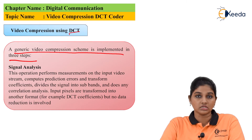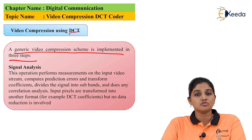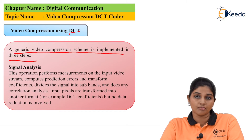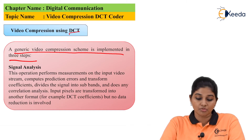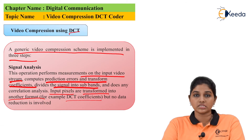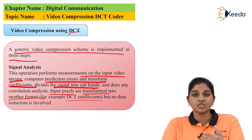The first step is signal analysis. As the name indicates, this block is used for analyzing the signal at the input. It includes dividing the image or picture into sub-blocks, performing measurements on the input video stream, calculating predictive errors and transform coefficients, and dividing signals into sub-blocks. It also transforms input pixels into another format, such as DCT coefficients, but no reduction of data is involved as it is considered the input stage.